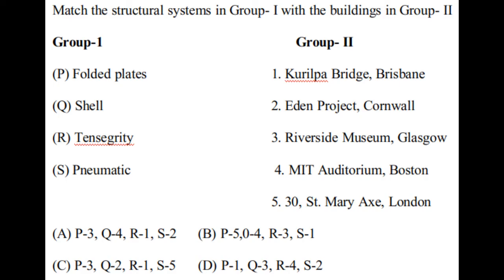Next question: match the structural system in Group 1 with the buildings in Group 2. Group 1: folded plates, shell, tensegrity, pneumatic. Group 2: Kurilpa Bridge, Brisbane; Eden Project, Cornwall; Riverside Museum, Glasgow; MIT Auditorium, Boston; 30 St Mary Axe, London. The correct option is A — P3, Riverside Museum, Glasgow, has a folded plate structure. Q4, MIT Auditorium, Boston, has a shell structure. R1, Kurilpa Bridge, Brisbane, uses tensegrity. And S2, Eden Project, Cornwall, is a pneumatic structure.